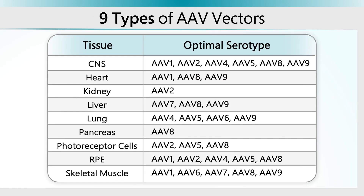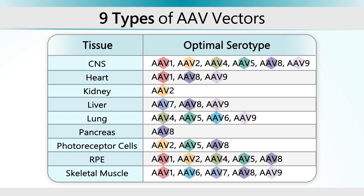There are nine different types of AAV vectors being used in gene therapy clinical trials, each targeting specific tissues. AAV vectors consist of tissue-specific promoters, which only allow transgene expression in certain cells, and the transgene, which encodes for a functional product.